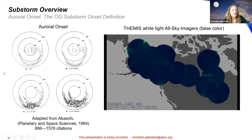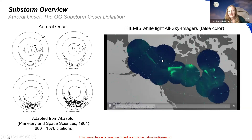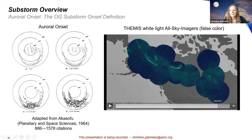Ending the substorm overview with the Akasofu figure — Akasofu sat outside in cold Alaska weather and watched the aurora over and over to draw by hand what the aurora looks like during a substorm. From the aurora perspective, you have an equatorward-moving auroral form which then brightens and explodes poleward and westward into what's called the westward traveling surge. In a movie: the equatorward moving auroral form brightens, then explodes, traveling poleward and westward — this is generally what you see during a beautiful substorm.